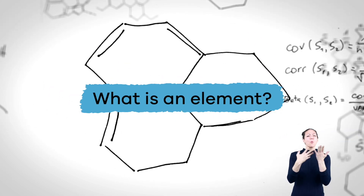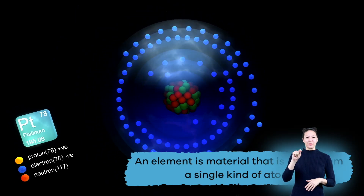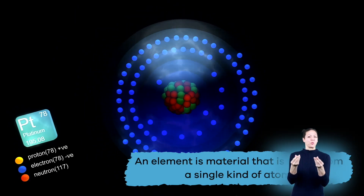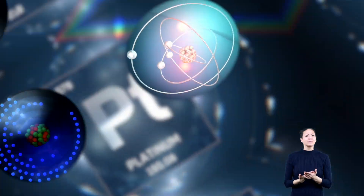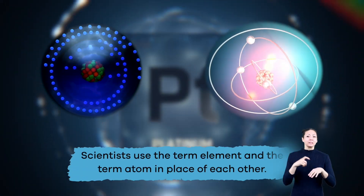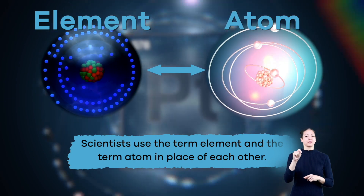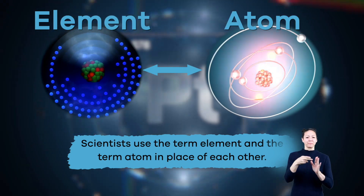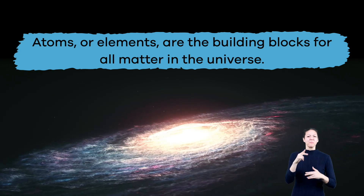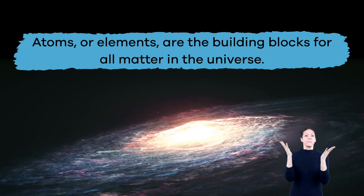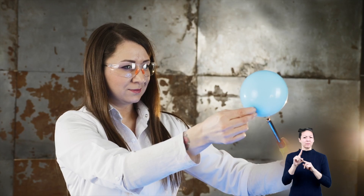Before we talk more in detail about the periodic table of elements, let's first talk about what an element actually is. An element is material that is made from a single kind of atom. In fact, a lot of the time scientists use the term element and the term atom in place of each other. Atoms or elements are the building blocks for all matter in the universe.